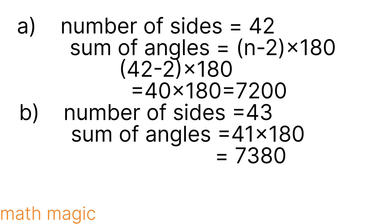That is 7200 degrees — that is the sum of inner angles of the 42-sided polygon. Second question: what is the sum of inner angles of a polygon with one side more? Number of sides is now 43. So sum equals (43 minus 2) into 180 equals 41 into 180.